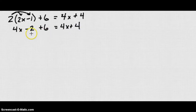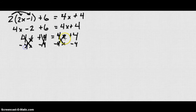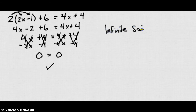We can combine some like terms here. We get 4x plus 4 equals 4x plus 4. When we subtract 4x and 4 from both sides, everything cancels out and we get 0 equals 0, which is true. This means the equation has solutions everywhere — I can put any number in for x and it will hold true, so there are an infinite number of solutions.